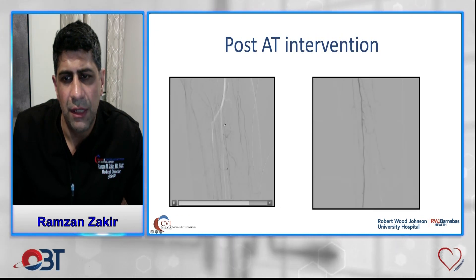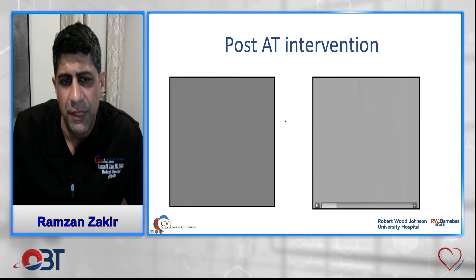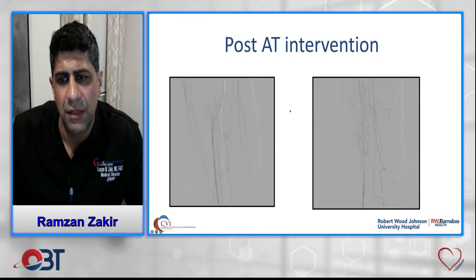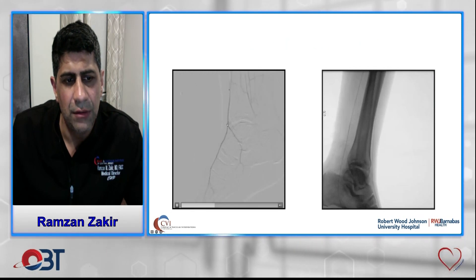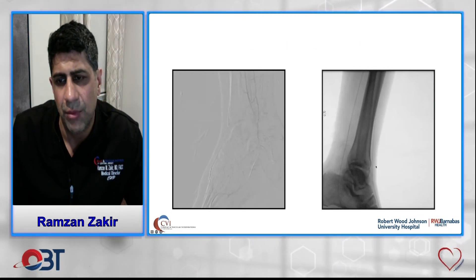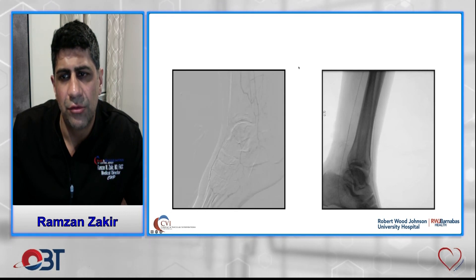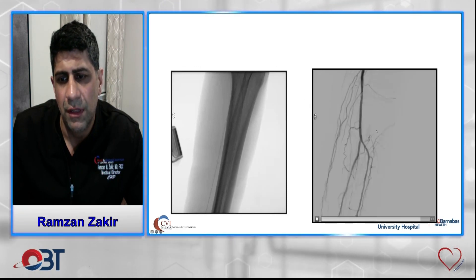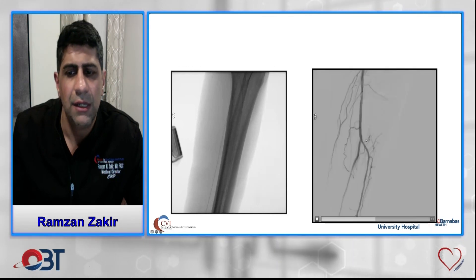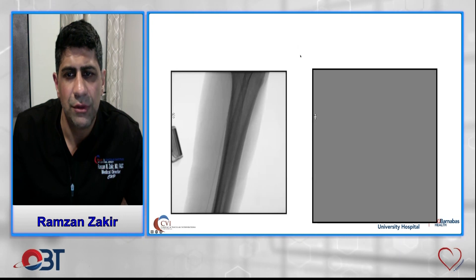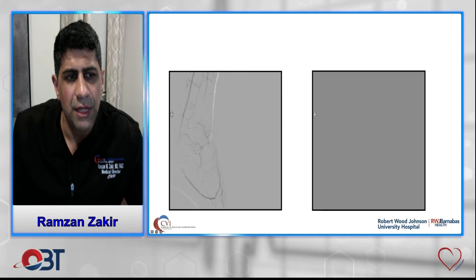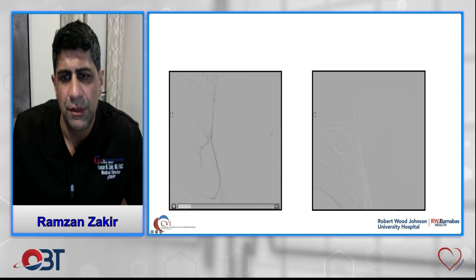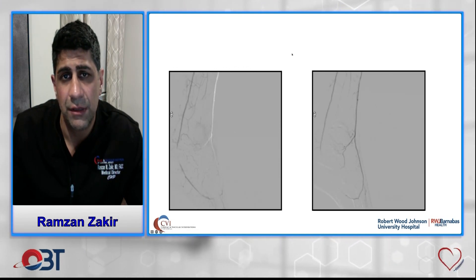After anterior tibial artery atherectomy and angioplasty, we used the pedal arch as a conduit to revascularize the posterior tibial artery. We traversed down the anterior tibial artery, across the arch, and worked the wire all the way back up to true lumen in the popliteal artery. After externalizing the wire, we performed laser atherectomy, angioplasty, and placed one stent in the posterior tibial artery. The final result shows a patent anterior tibial artery, patent posterior tibial artery, and a complete plantar arch — allowing the patient to heal both his heel and toe ulcers.